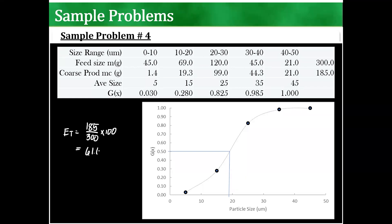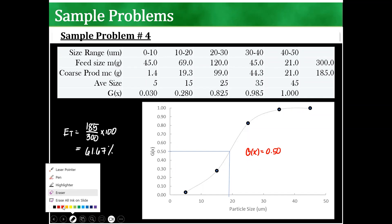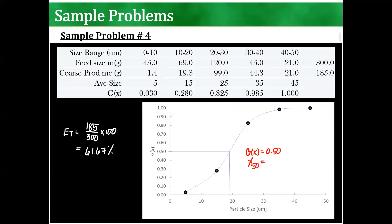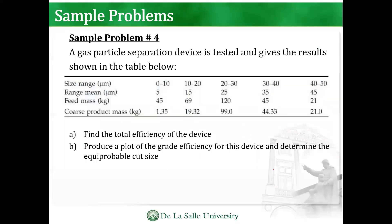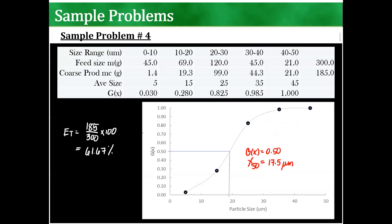So this is 61.67% efficient. And then you can see in here that at GX is 0.5, roughly the particle size, or X50, is approximately 17.5 microns. Around 17 or 18, something like that. Okay?